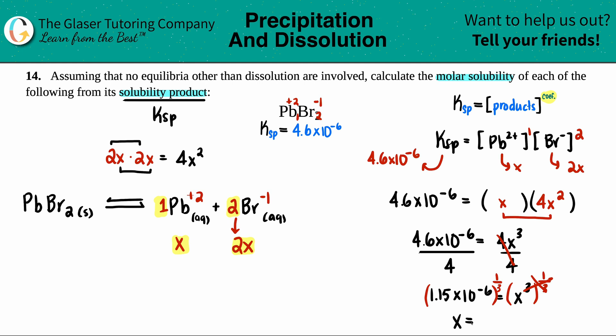So this value raised to the one third is two sig figs. So maybe I'll just say 0.010 molarity.